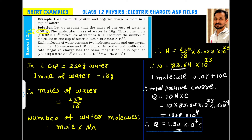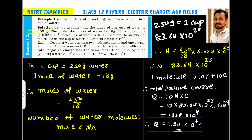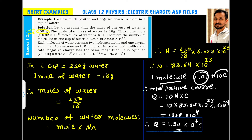So the number of water molecules equals (250 ÷ 18) × Avogadro's number. Multiplying this out gives 83.64 × 10²³ molecules. So in 250 grams — one cup of water — we have 83.64 × 10²³ water molecules. We already know that one molecule contains 10 protons and 10 electrons.